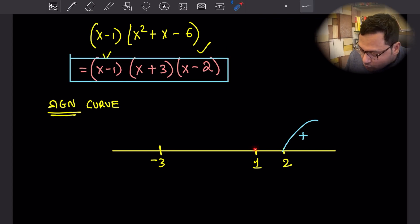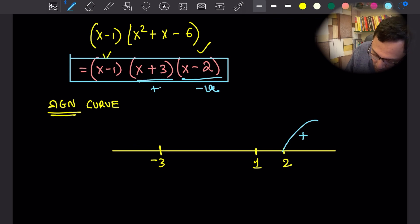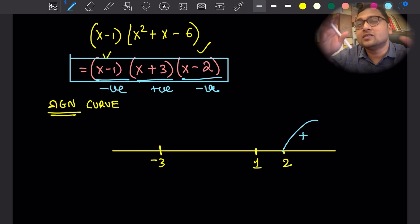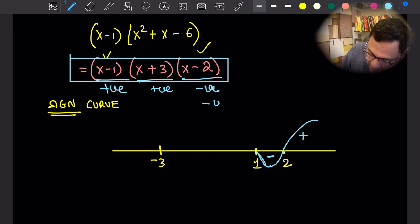When x is between one and two, x minus two is negative. This one is positive, this one is positive. So positive times positive times negative is negative. So it will go below the number line, negative. When it is between negative three and one, we have two negatives and one positive. Negative times negative will become positive, times positive is positive. So we have again this.